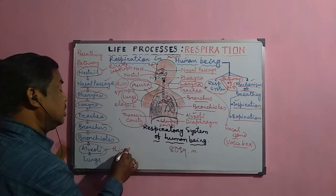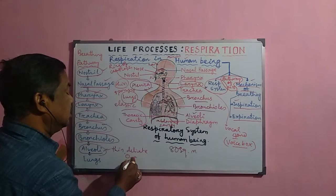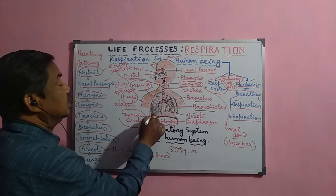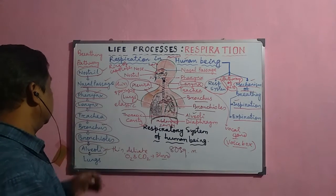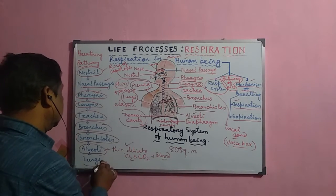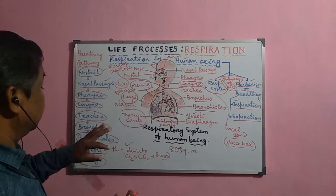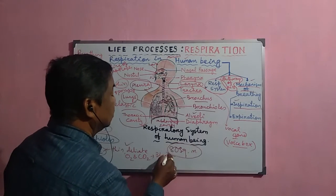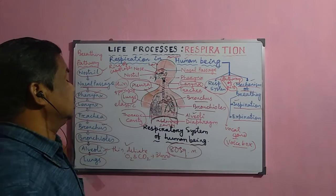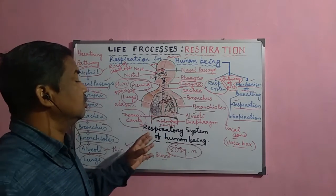The alveoli are very thin and delicate, and the exchange of oxygen and carbon dioxide with the blood occurs there because the blood circulation is connected to the lungs. The lungs provide a large surface area — around 80 square meters — for gas exchange, and are spongy and elastic in nature.